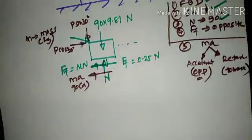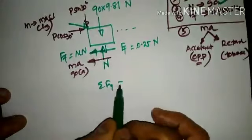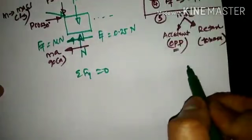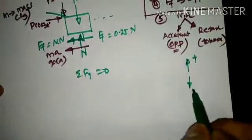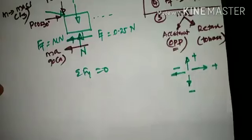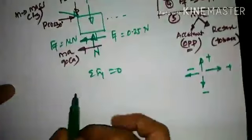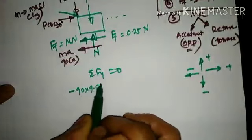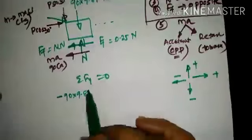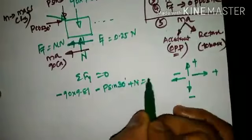To find all force components, we apply the equations of equilibrium. Taking ΣFy = 0: upward forces are positive, downward forces are negative. The self-weight 90 × 9.81 is downward, so it is negative. P sin 30° has a downward component, so it is also negative. The normal reaction N is upward, so it is positive. The equation becomes: −90 × 9.81 − P sin 30° + N = 0.